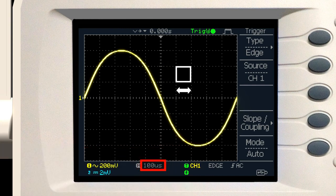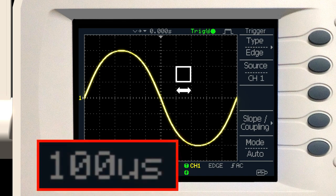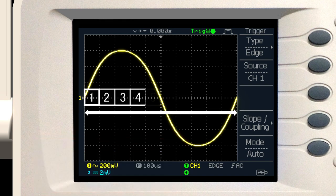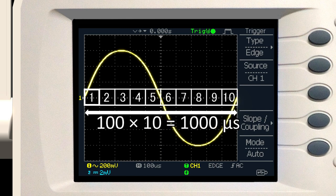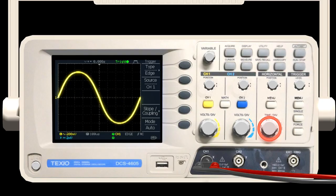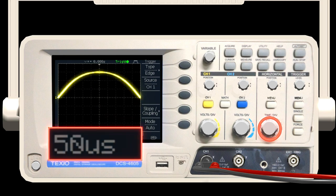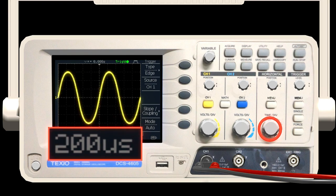The horizontal axis and the time axis are set to 100 microseconds per division. The period of the signal is 10 divisions. So 100 times 10 equals 1000 microseconds, or 1 millisecond. The time axis is set by the time division switch. Turning it to the right shortens the time per division. And turning it to the left lengthens it.